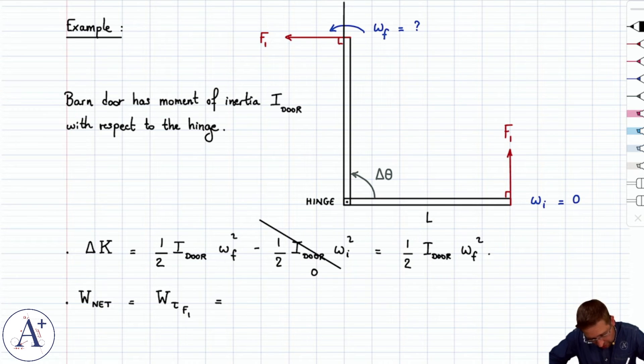Because F1 is constant in magnitude and direction relative to the door, this is going to be equal to torque of F1 times delta theta. If the torque is constant, you can compute the work that it does by simply multiplying torque by delta theta. You just need to figure out if it's positive or negative. It will be positive if the force helps the object rotate, negative if the force opposes the rotation. Here, F1 is the reason why the door rotates in the first place, and therefore it's a positive torque. We have torque of F1 times delta theta,